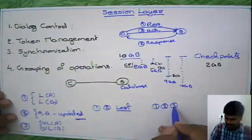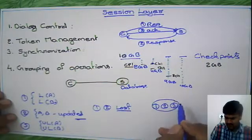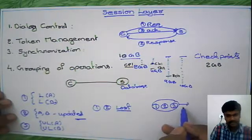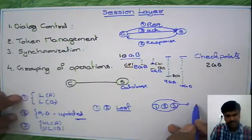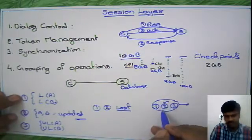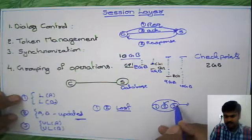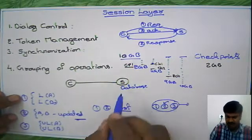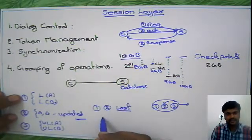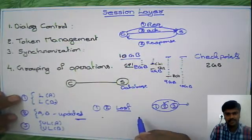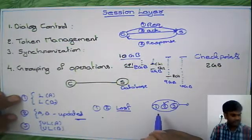Then it will send these 3 together to the database. First it will lock data fields A and B, then it will update that particular data, then it will unlock. Then server will give acknowledgement to the client if it is successfully updated in the database. So this is the actual scenario.